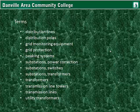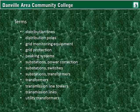Terms for this lesson include: distribution lines and poles, grid monitoring equipment, grid protection, peaking systems, power correction, substations, switches and transformers within substations, utility transformers and transformers, general knowledge of transformers, transmission line towers, transmission lines and their purpose, and utility transformers specifically. You can be done with the reading or close to it. The Module 5 Lesson 1 Quiz will cover the reading, the text, and also this PowerPoint lecture.